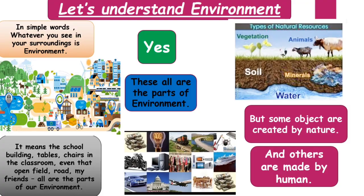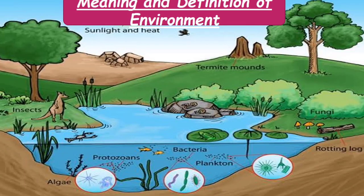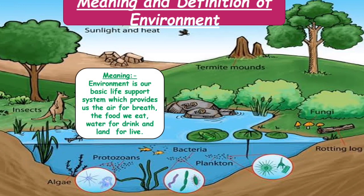Now let's understand the meaning and definition of environment. Environment is our basic life support system which provides us the air to breathe, the food we eat, water to drink, and land for life. Environment supports our life.